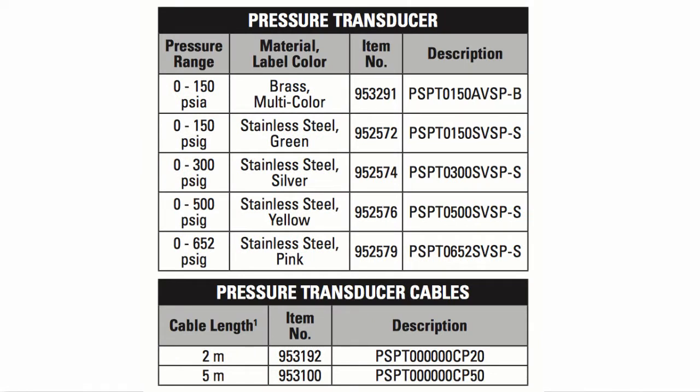The 0 to 150 absolute for low pressures is typically used when operating around zero psi. The 0 to 300 is used with 410A and the 0 to 500 is used with CO2.